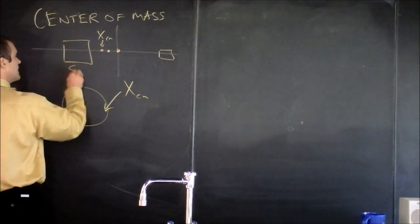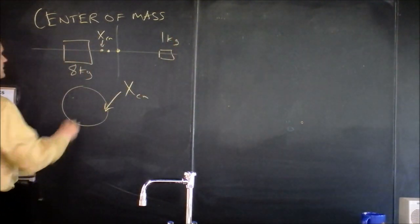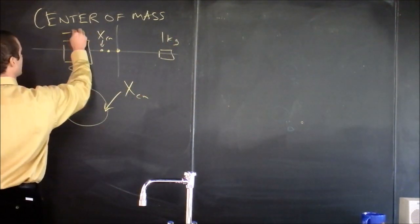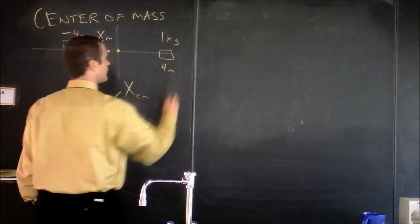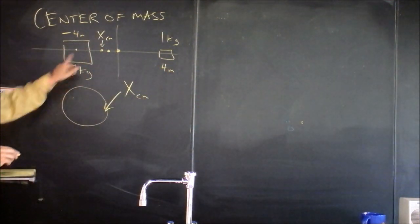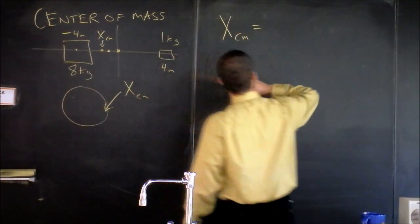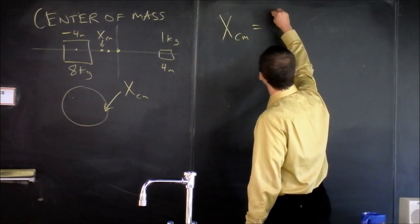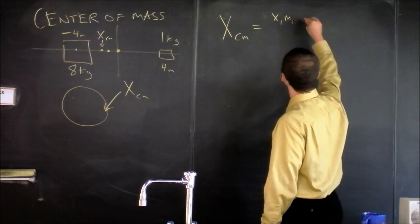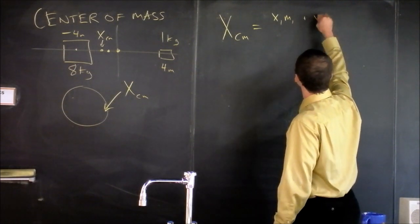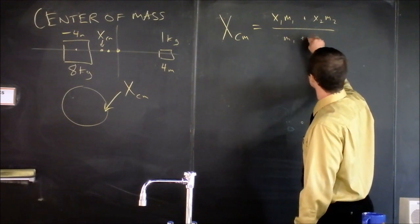Let's say that this is 8 kilograms and this is 1 kilogram. And this is located at negative 4 meters and this is located at positive 4 meters. And we can get ourselves an actual position of the center of mass using this equation. Here's the position of the center of mass and it says, it's going to be the position of mass 1 times the mass of mass 1 plus the position of mass 2 times the mass of mass 2 divided by the total mass.